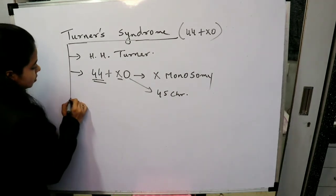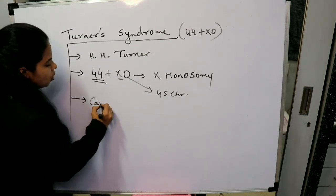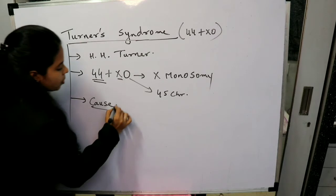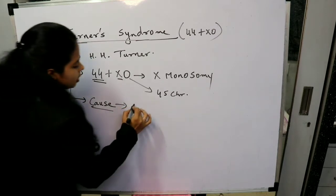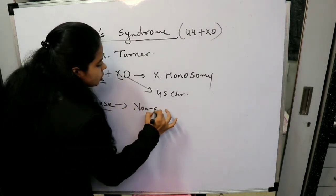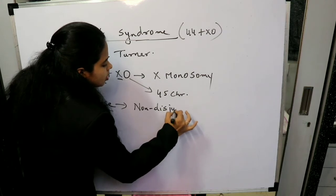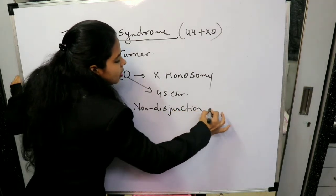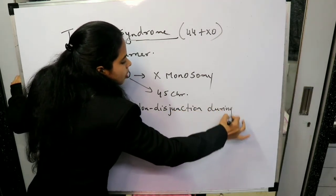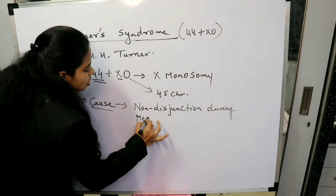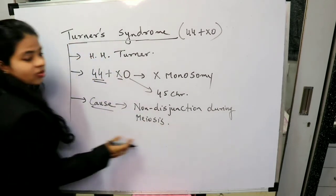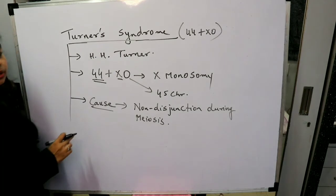Now, let's see the cause. Now what is the cause of Turner's syndrome? Cause of Turner's syndrome is non-disjunction during meiosis. So this is one of the reasons of Turner's syndrome.